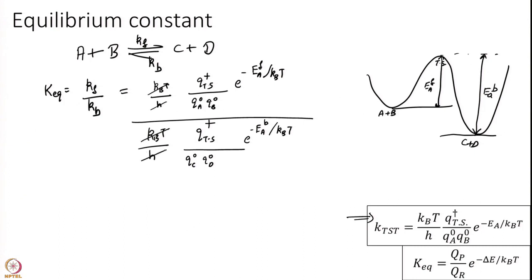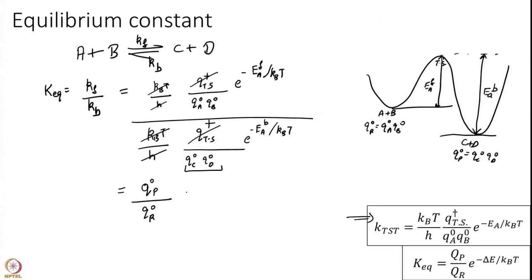You note that a lot of terms will cancel. KT over H cancels, Q_TS cancels, and what I am left with is Qc times Qd written as Q products divided by Q reactants. So Q reactants 0 is Qa0 times Qb0, and Q products 0 is Qc0 times Qd0, times e to the power of minus (Eaf minus Ea_back). But Eaf minus Eab is simply delta E. So I get this expression for K equilibrium according to Transition State Theory.